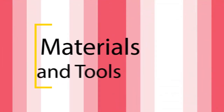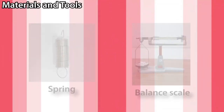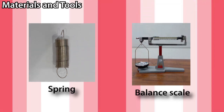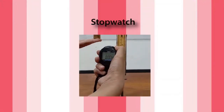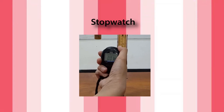The materials and tools in this experiment include: the spring — a couple of coils of metal; balance scales; masses and containers, where your masses are like coin masses that can fit on the containers like a pipe; a stand and rulers to hold the system vertically so it can freely oscillate; and finally a stopwatch to record the times, which is the period.